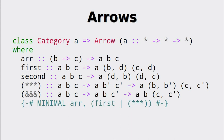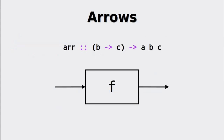When looking at the type class for arrows, we see many functions, but luckily the minimal definition only needs two of them. The first one, arr, is used in order to lift an ordinary function into the arrow context. The other functions are used for composition. arr is our basic building block — it lifts a function into the arrow context, similar to return in the monadic context.